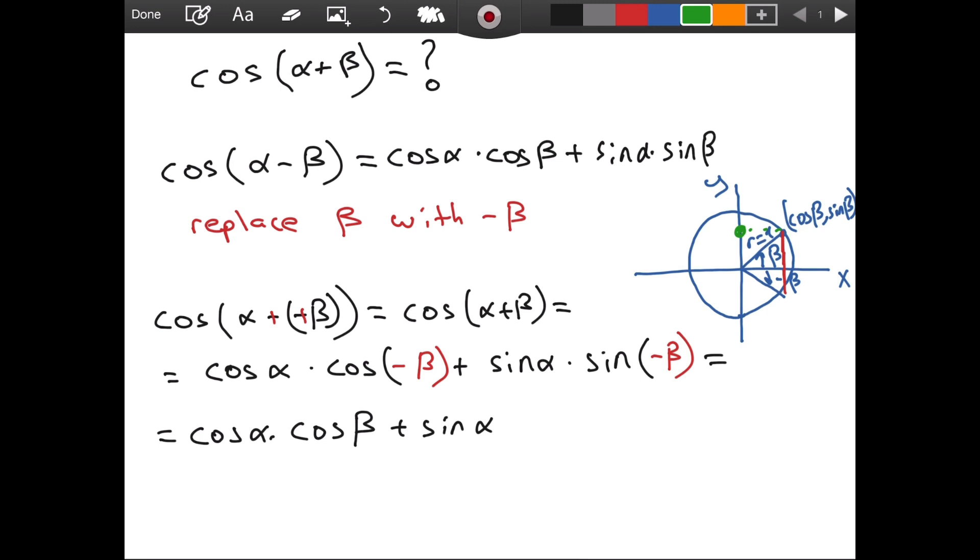And in fact, since this picture is symmetrical, this and this distances will be same. Only their signs will change, which means sine of beta is equal to negative sine of negative beta. So, we can substitute negative sine of beta for sine of negative beta. And if we distribute this negative sine, if we bring it front, we will have cosine of alpha times cosine of beta minus sine of alpha times sine of beta.